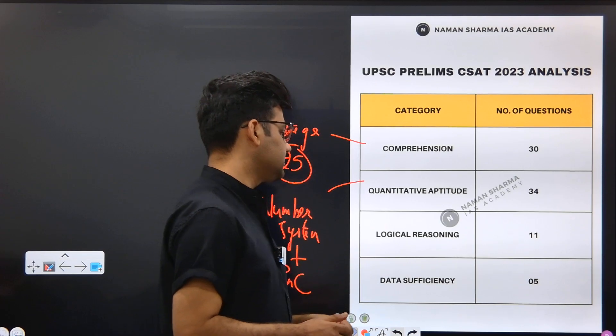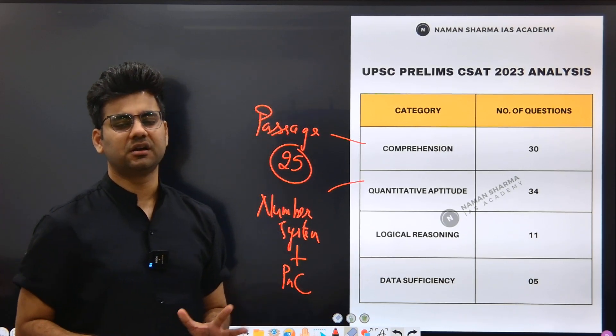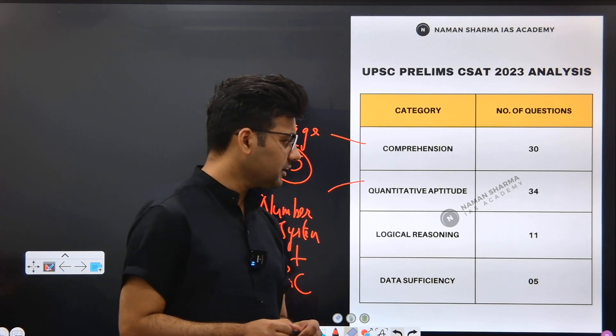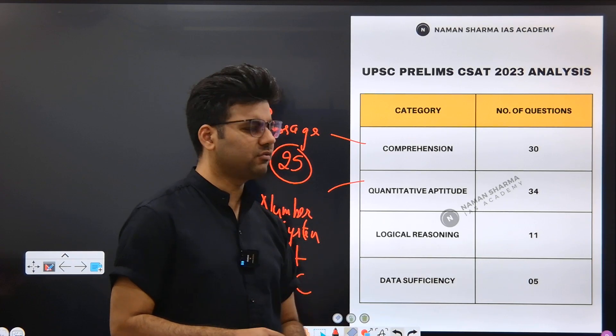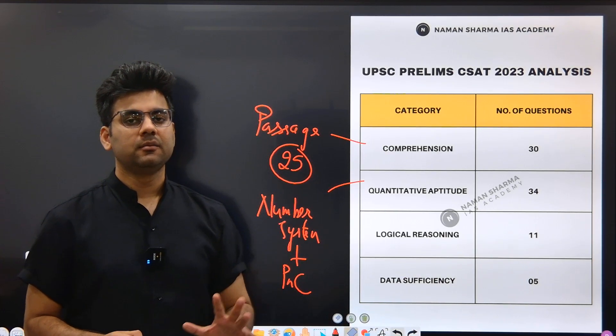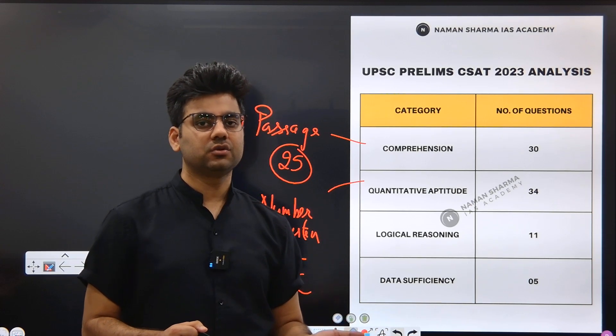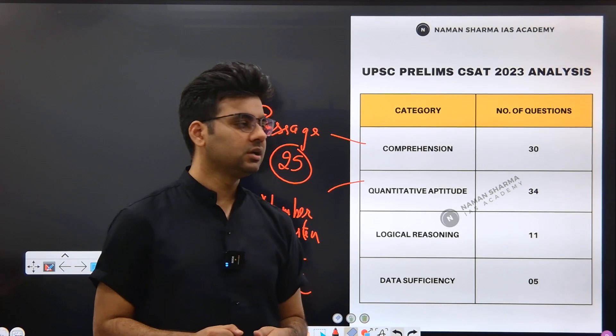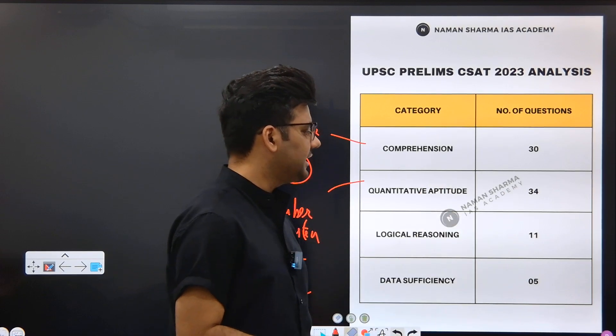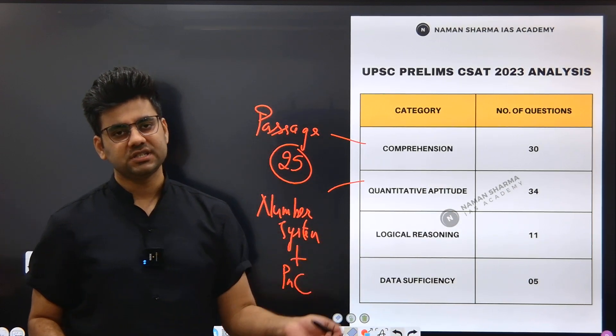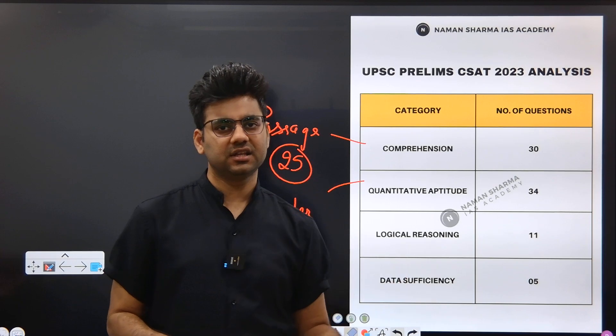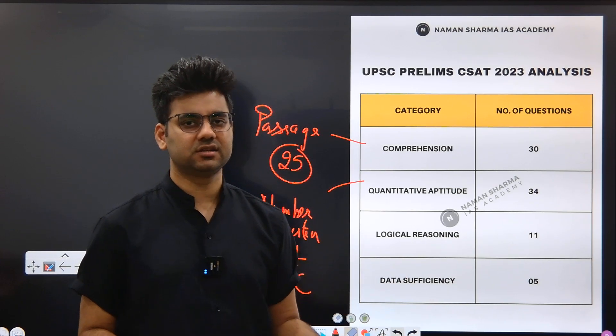Next part is logical reasoning which included 11 questions and this part was pretty moderate. Questions asaan thi but the statements were lengthy. Students took a lot of time in attempting these questions. Logical reasoning had 11 questions only aur kuch aise area se questions puchhe gaye the. Thoda sa hum unko less important liye ke chalte hain.